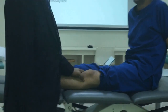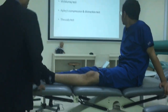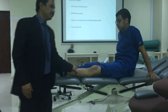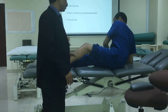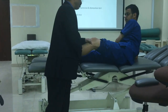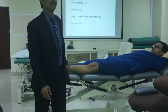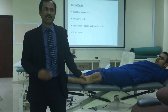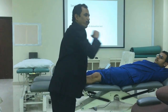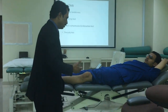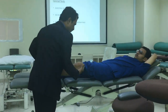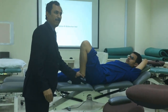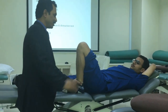Number two - McMurray test. What is McMurray test? This is the test to identify either medial menisci or lateral menisci. How to perform: patient in supine position, stabilize the knee joint with one hand, and keep the knee in complete flexion.